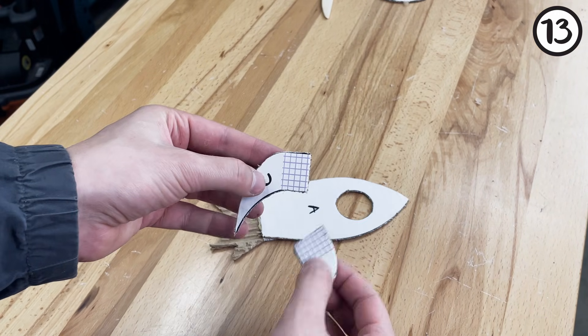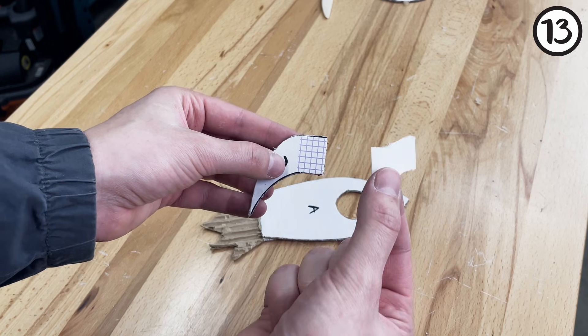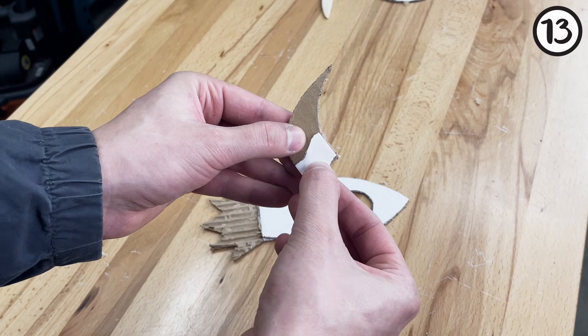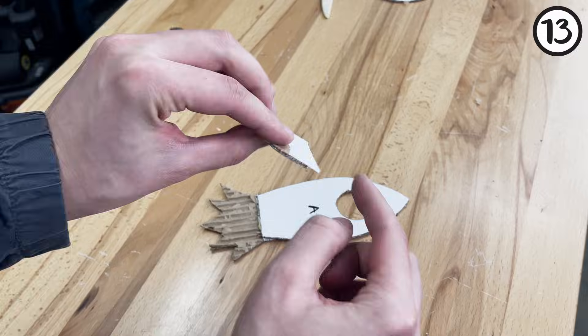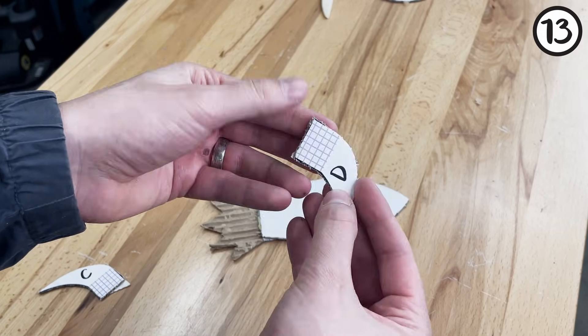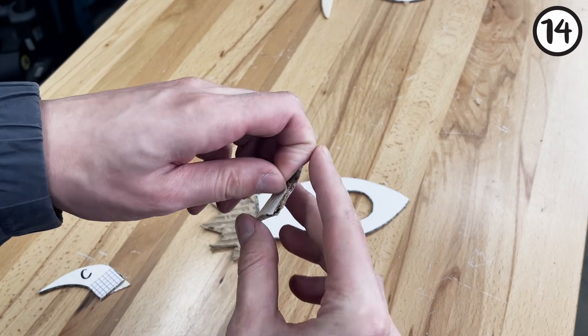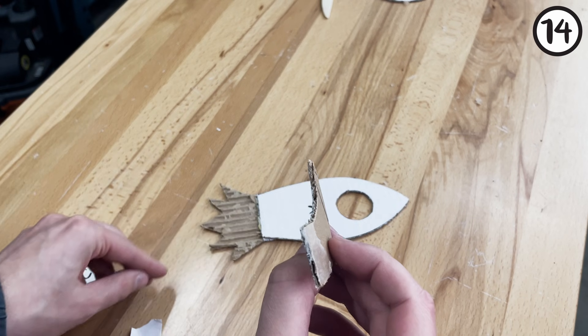Step 13. Apply double sided tape or glue to the fins, Part C and D. Step 14. Attach the fins to the rocket body, Part A.